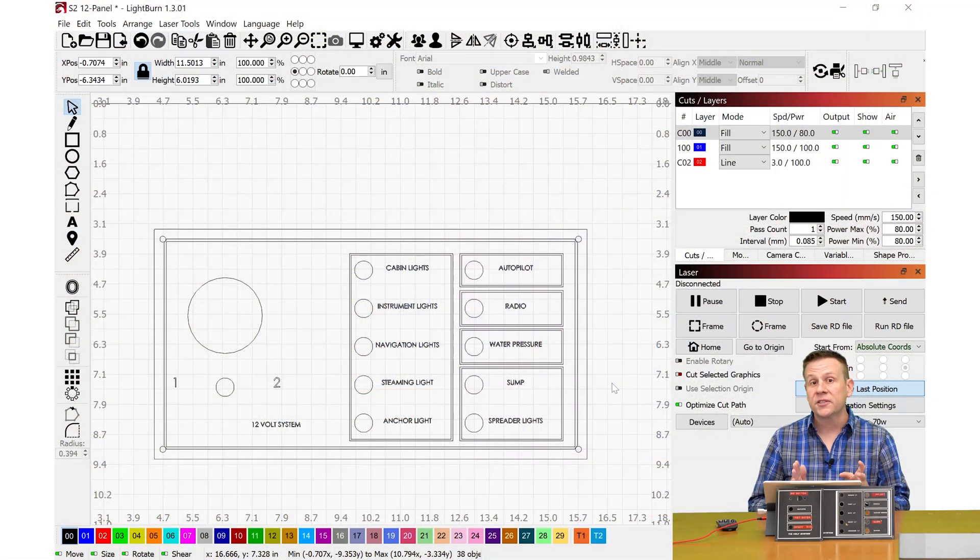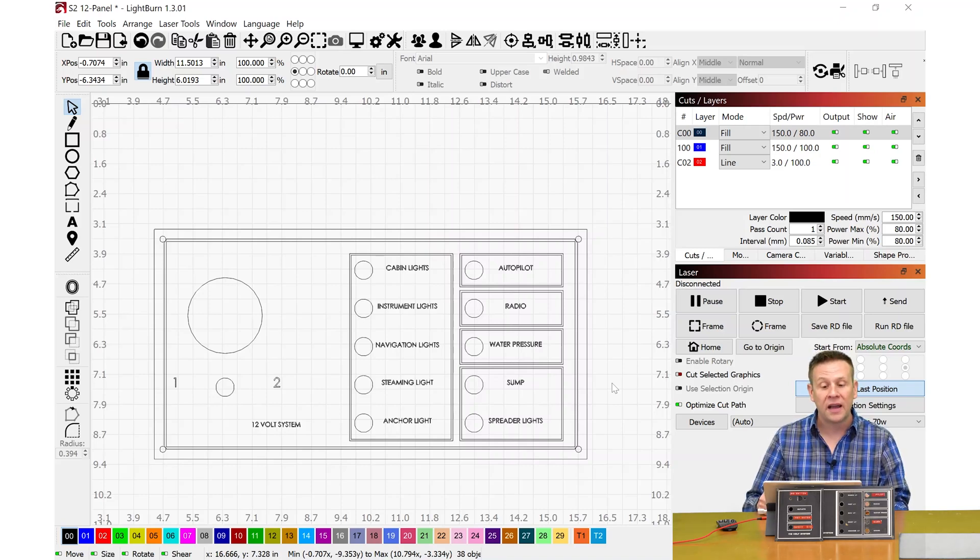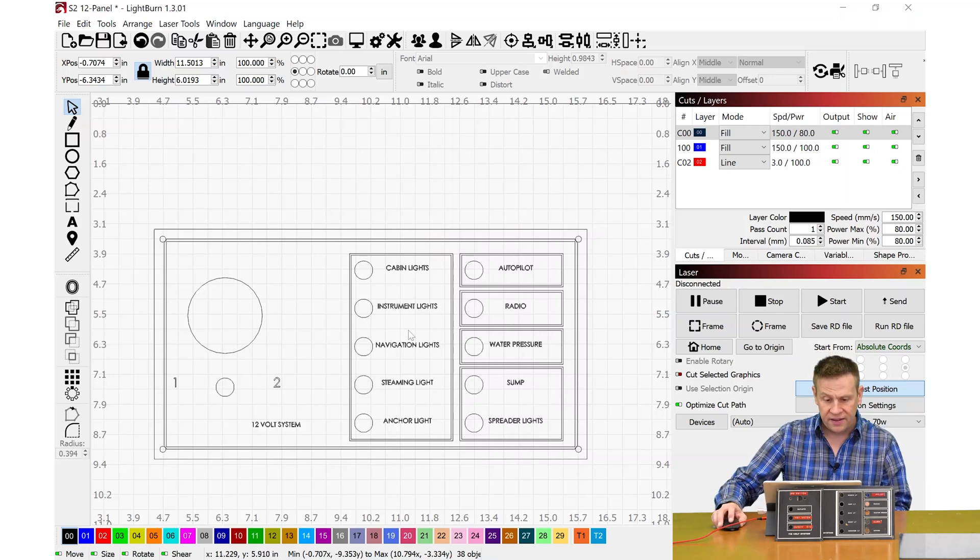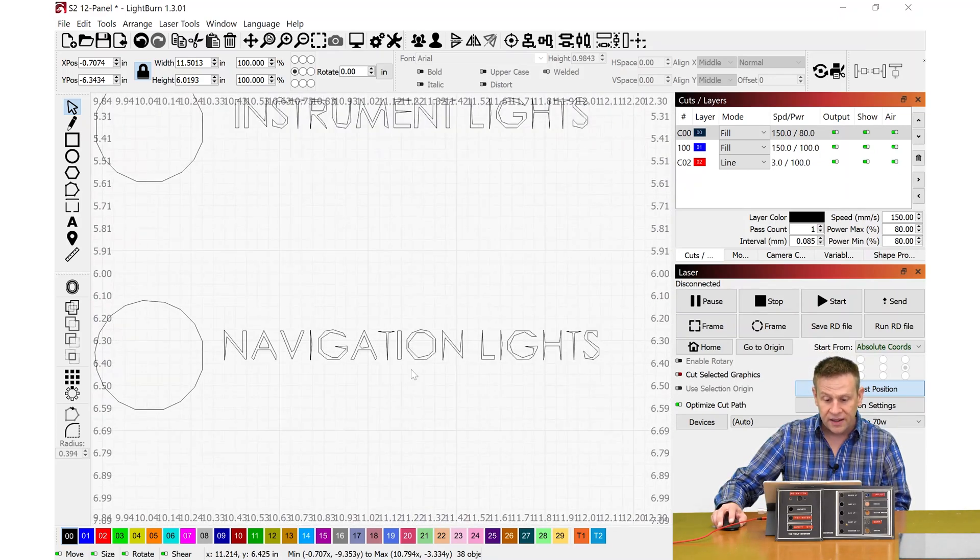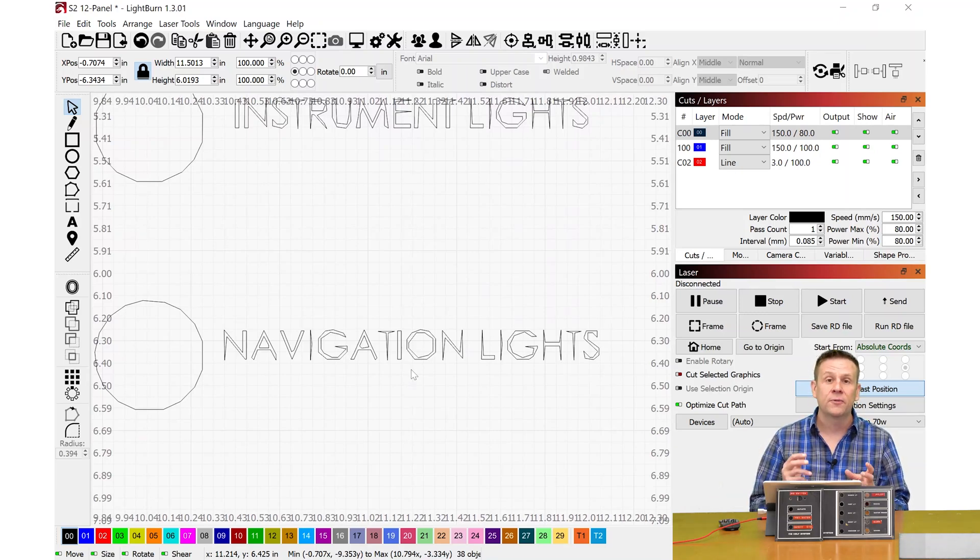Inside the LightBurn software I've already imported the PDF file. Now because that PDF file shows up as an image in LightBurn, it can only be engraved. And of course on these panels there's holes that need to be cut out for the mounting, buttons, and switches. So I went and used the trace function within LightBurn software. Right now it doesn't look too bad until I start to zoom in on some of the text and it doesn't really look that good.